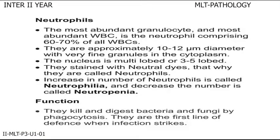Neutrophils: the most abundant granulocyte and most abundant WBC is the neutrophil, comprising 60-70% of all WBCs. They are approximately 10-12 micrometers in diameter with very fine granules in their cytoplasm. The nucleus is multi-lobed, or 3-5 lobed. They are stained with neutral dyes, that is why they are called neutrophils. The increase in number is called neutrophilia and decrease in number is called neutropenia. They kill and digest bacteria and fungi by phagocytosis and are the first line of defense when infection strikes.